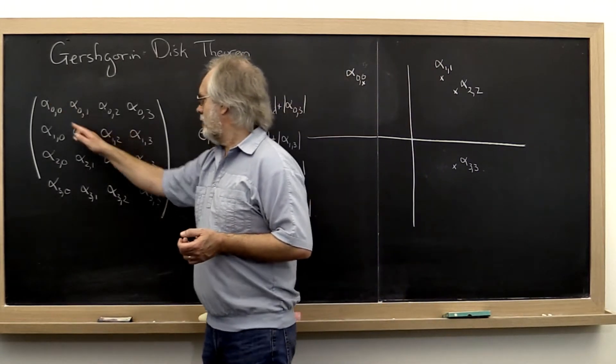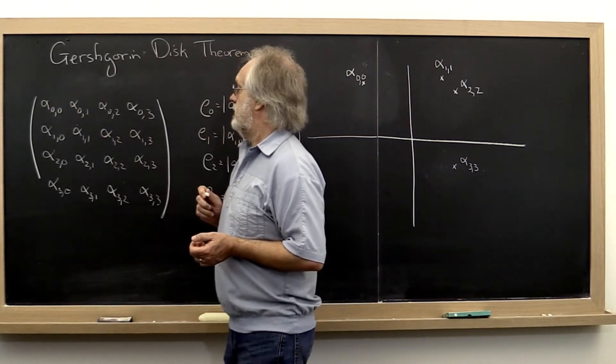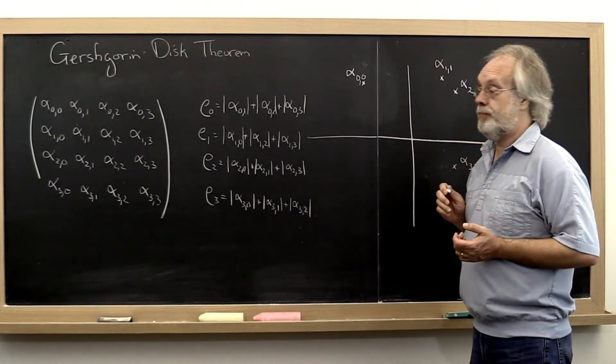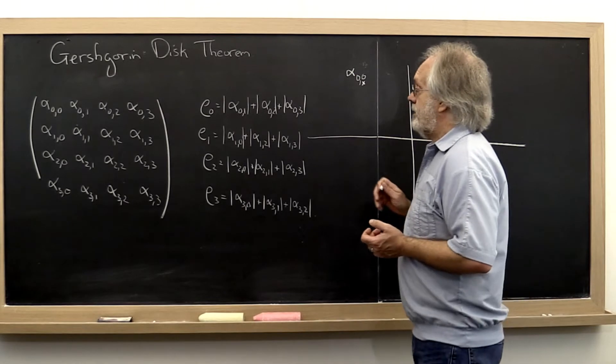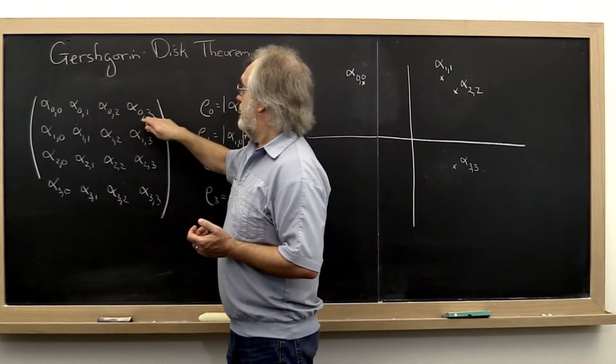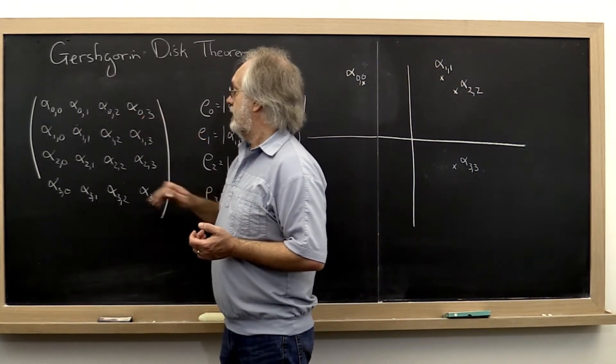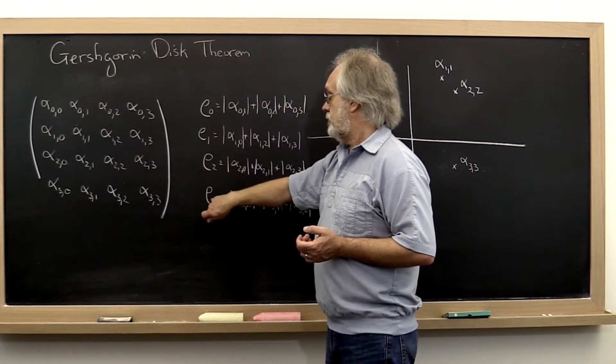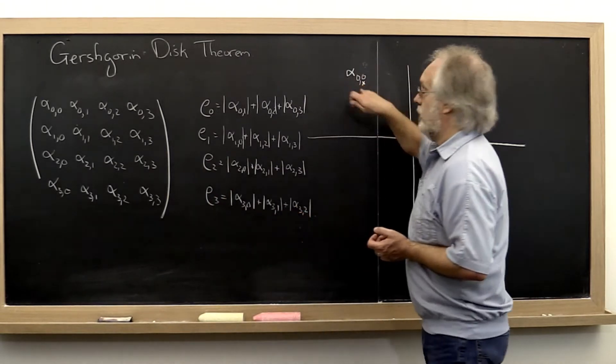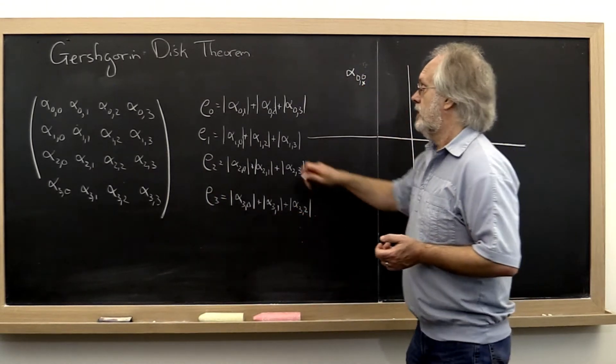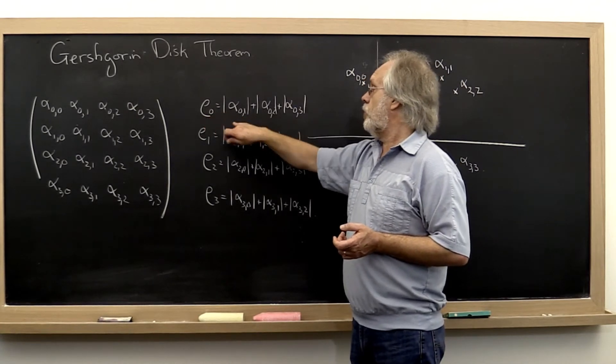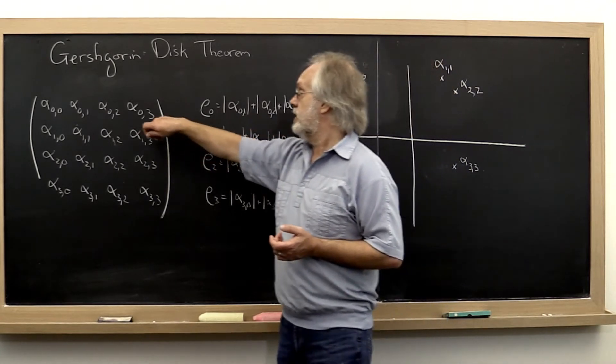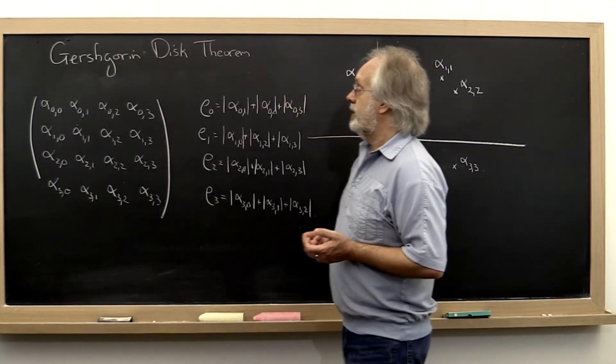You look at the diagonal elements of this matrix and you place them in the complex plane. Then you can take the sum of the absolute values of the off-diagonal elements in each row and consider those to be a radius to a circle around these points in the complex plane. So here we have the radius row zero, which is the sum of the off-diagonal elements, well the absolute values of the off-diagonal elements in the row index with zero.